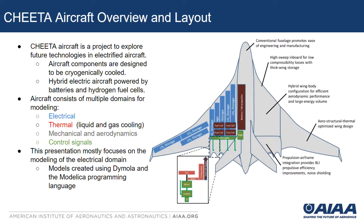The Cheetah aircraft is a project to explore future technologies in electrified aircraft. It's a hybrid electric aircraft powered by batteries and hydrogen fuel cells. Another interesting fact about the aircraft is that the components are designed to be cryogenically cooled by liquid hydrogen. On the right, we have an overview of how the different domains would be placed inside of the aircraft.